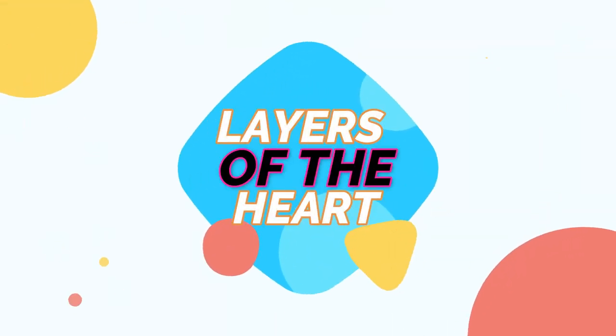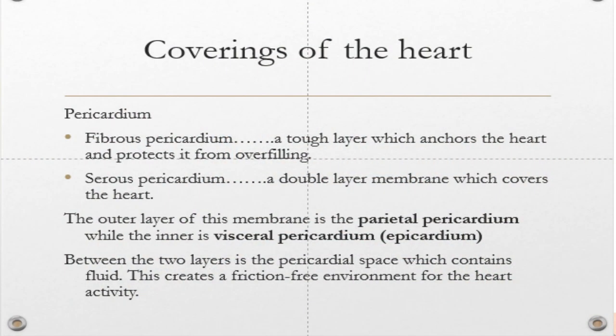Let's briefly look at the layers that make up the heart, because the heart is a multilayered organ — it's not made up of only one layer but different layers. On the outermost layer of the heart is a membrane that we call the pericardium. 'Peri' comes from the word perimeter, meaning around, and 'cardium' from cardio, meaning heart. So it is a thin membrane that covers the heart — that is what we call the pericardium.